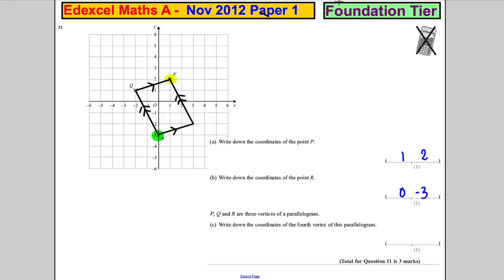So the coordinates of the fourth vertex would be this here. And it's 3 across and 2 down. So 3, negative 2.